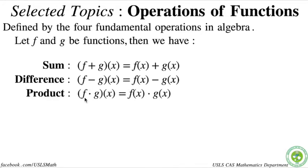We also have product. This is commutative, so f times g of x is just equal to f of x times g of x, or g of x times f of x, since multiplication is commutative. Just take note: in some books, they don't use the raised dot anymore. We started using the raised dot in algebra when x came in. Some books don't use a visible operation in between — they just put f and g together, which signifies multiplication already.